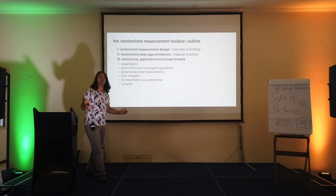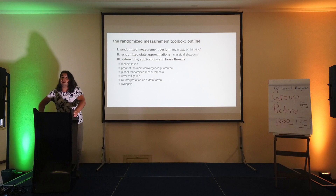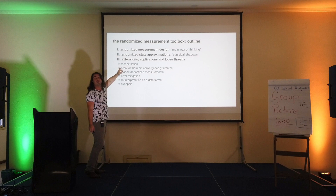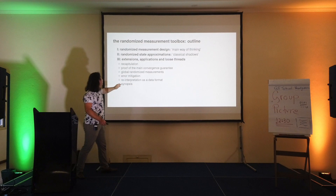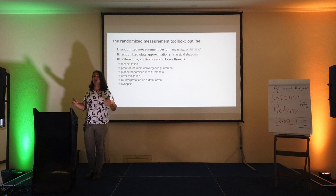In the beginning I still owe you something very important. I owe you a proof that the techniques I'm sharing with you are trustworthy and do the things we want on an efficient level. The first part of today's talk will be a quick recapitulation to help you remember what we did so far. Then we will do a proof of the main convergence guarantee — showing that these randomized measurements can predict very many observables in a tractable and efficient manner.